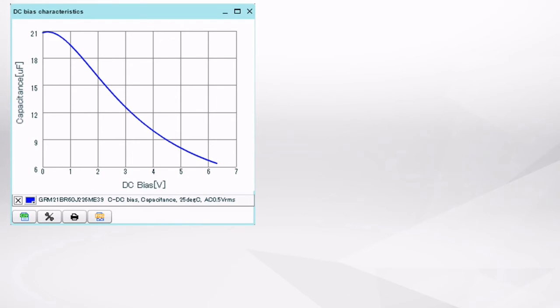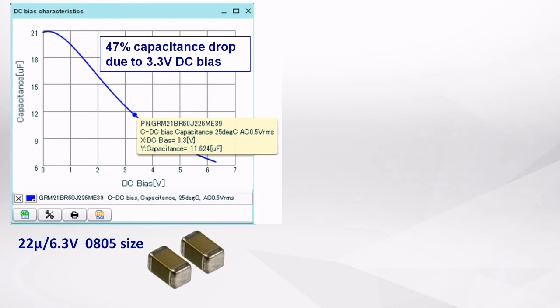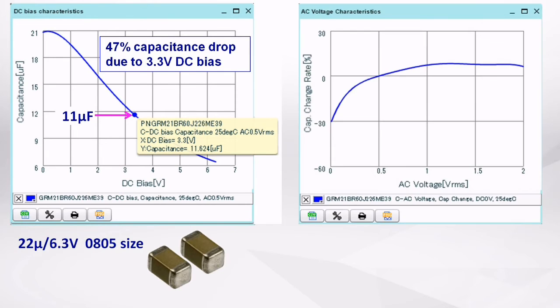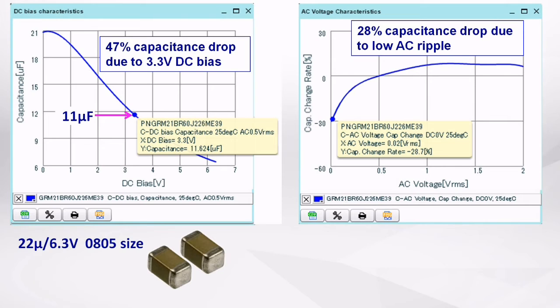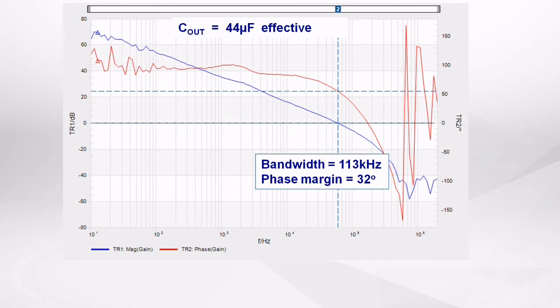The reason for the poor stability is the reduction of the output capacitance. A 22µF 6.3V 0805 size MLCC capacitor has only 11µF at 3.3V DC bias, and will drop another 28% due to its low AC ripple in the buck application. So we end up with totally 16µF effective output capacitance instead of the original 44µF design value.